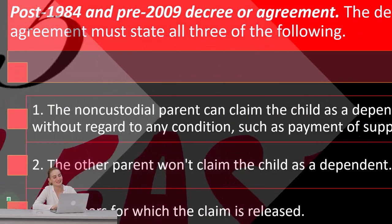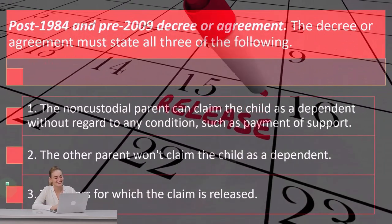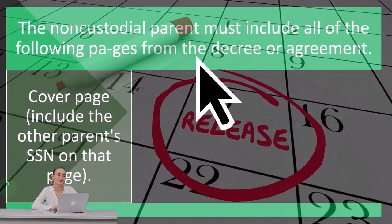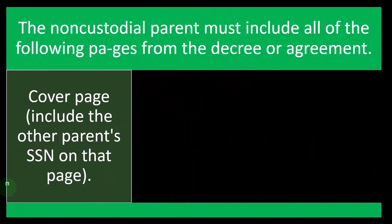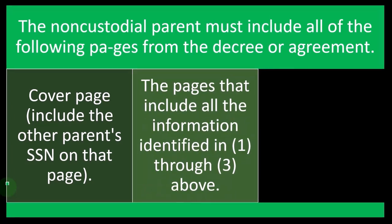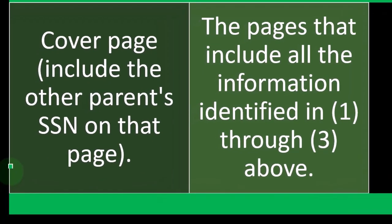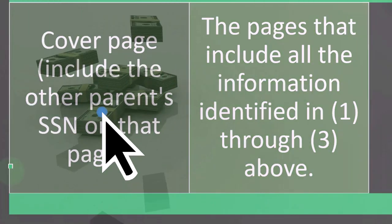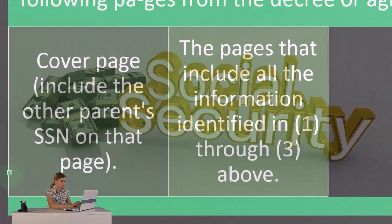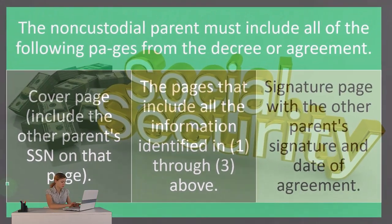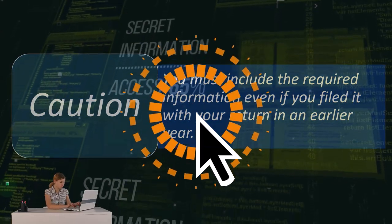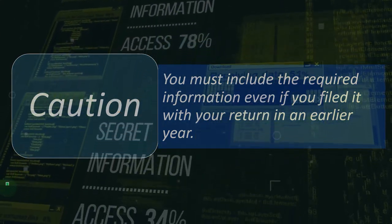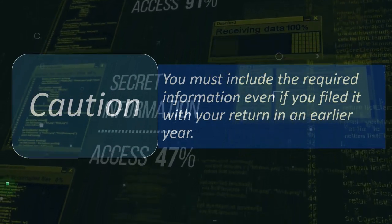Number three, the years for which the claim is released — so you want some defined terms on it. The non-custodial parent must include all of the following pages from the decree or agreement: the cover page, including the other parent's social security number on that page, since the IRS needs to know who the other parent is; the pages that include all the information identified in points one through three above; and the signature page with the other parent's signature and date of agreement. Caution: you must include the required information even if you filed it with your return in an earlier year — apparently the answer is yes, you do need to include it again.